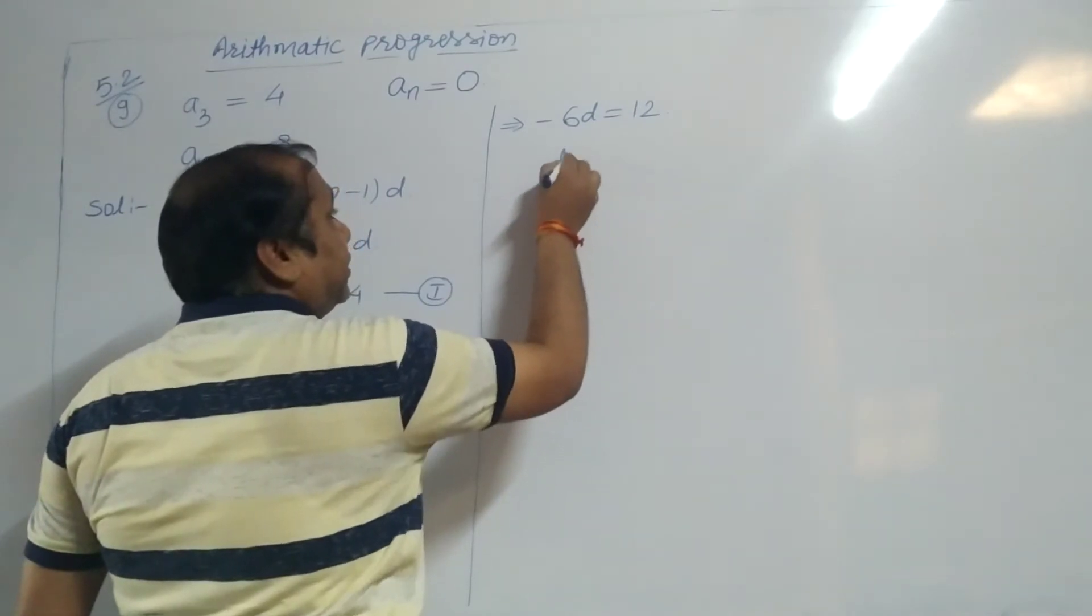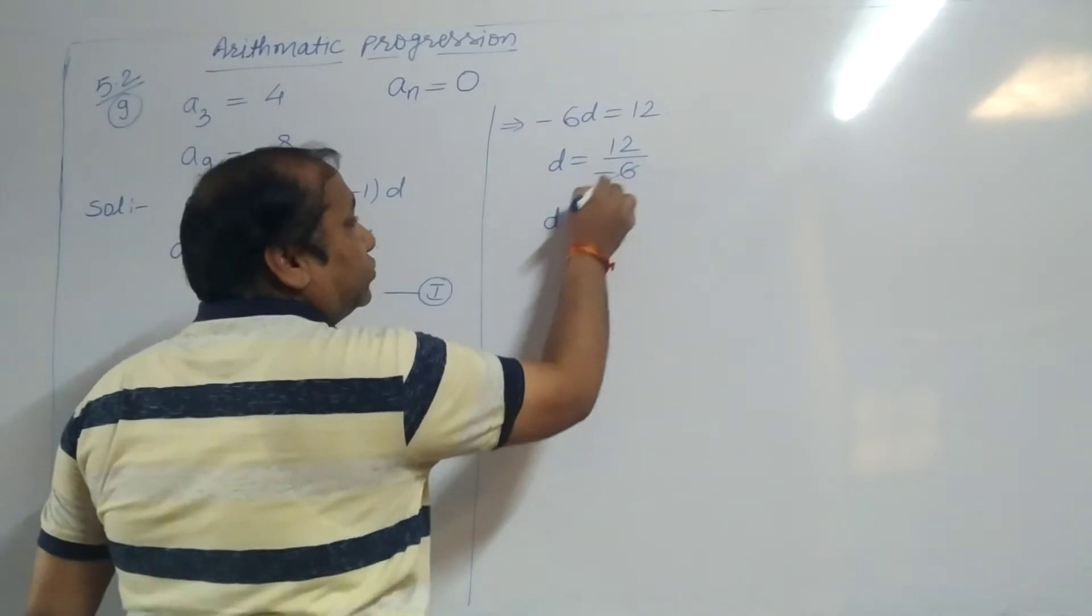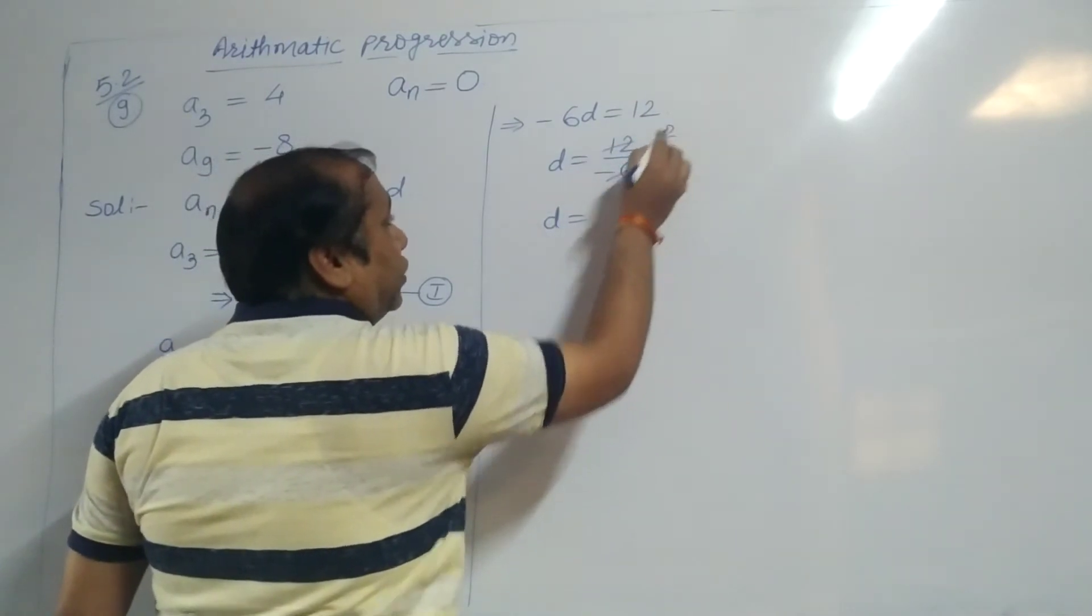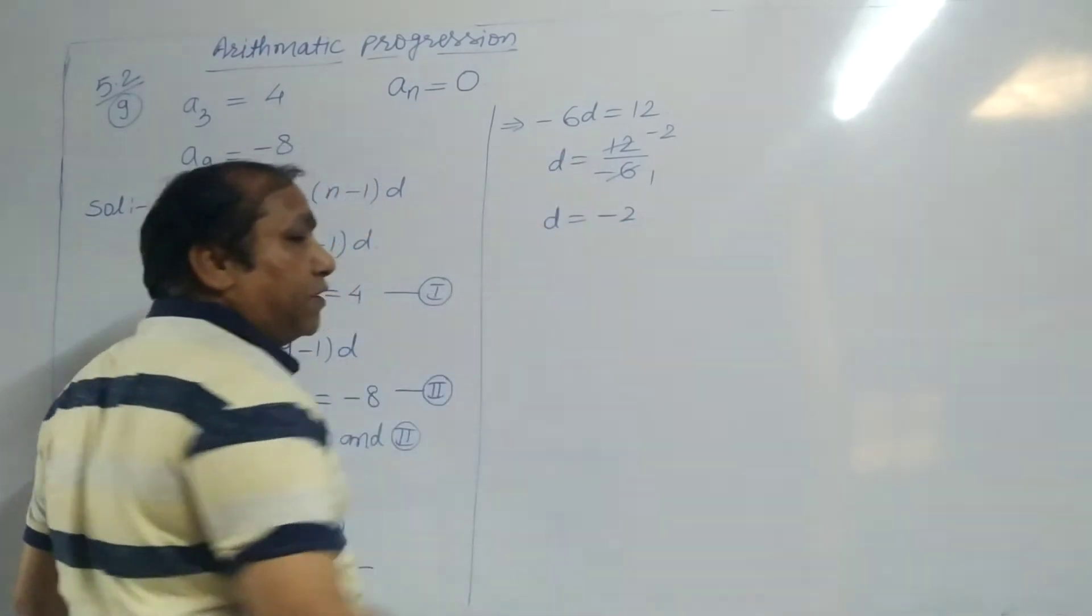D equals 12 upon minus 6. D equals minus 2. D's value is minus 2.